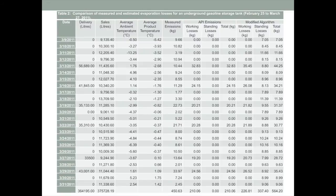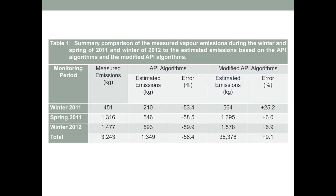We compared our model results to what we measured and what the API algorithms would predict. Rather than show the day-by-day table, I'll skip to what we saw as a function of season. In the first year, the system didn't get running until the beginning of March, so we had about 28 days of data in March. The API algorithms estimated 210 kilograms of product evaporated from the tank for that period, while our measurements showed 451 kilograms of product being emitted — so the API number was low by roughly a factor of two.